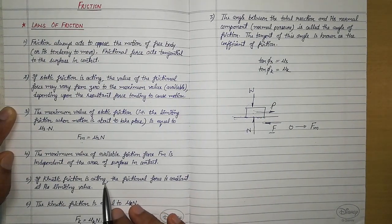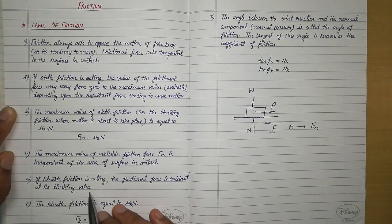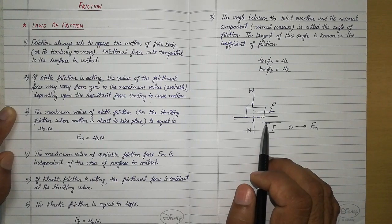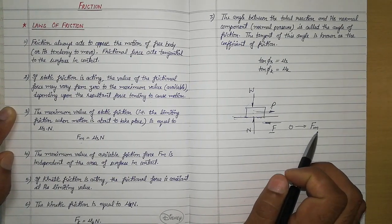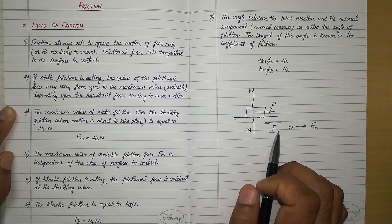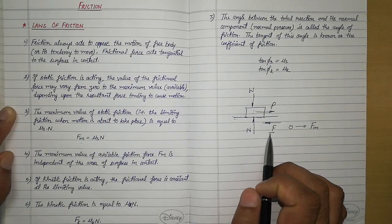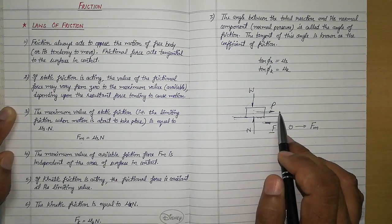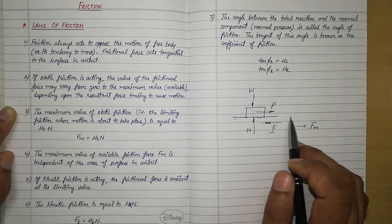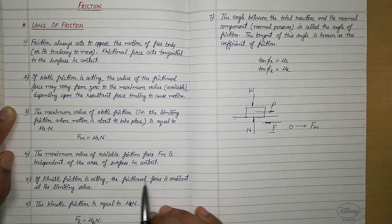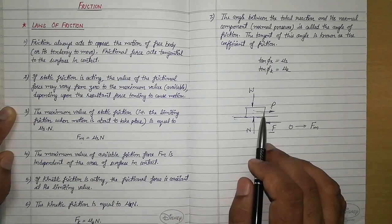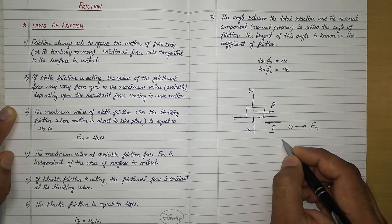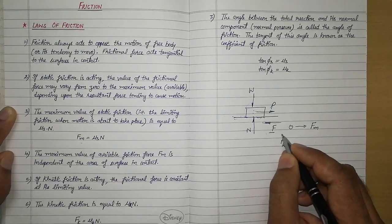In the fifth point: if kinetic friction is acting, the frictional force is constant at its limiting value. If we increase the applied force P further beyond the limiting friction, the body starts to move — in this case, towards the right. Once motion happens, static friction gets converted into kinetic friction. When there is relative motion between two surfaces in contact, the friction developed is called kinetic friction, and its value is always constant.